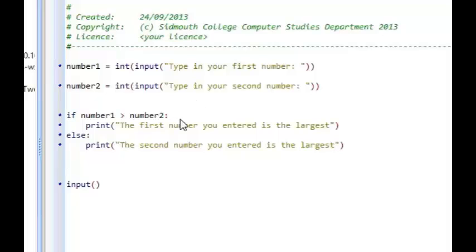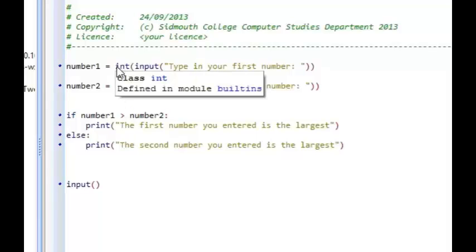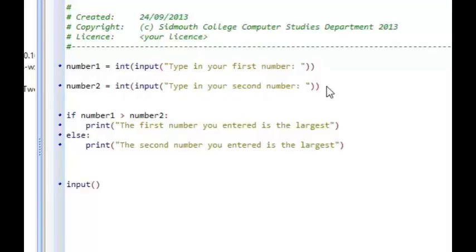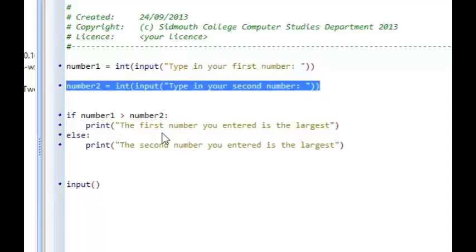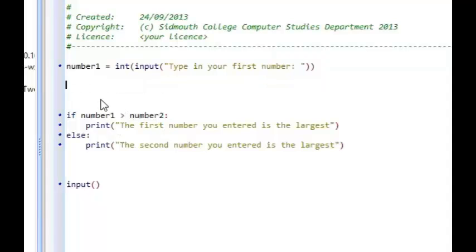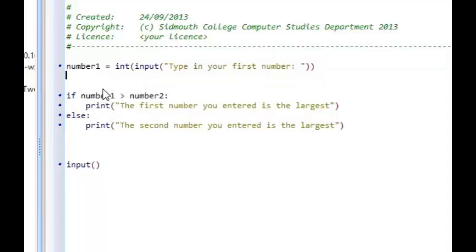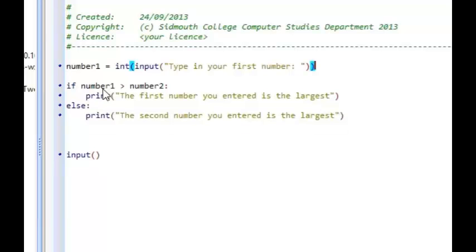Let's imagine that instead of displaying one of two options, we actually want our program to display one of three options. It might be that we want our program to decide whether the number we've entered is greater than zero, equals zero, or less than zero. As an example, if we're only going to type in one number and compare it against whether it's greater than, smaller than, or equal to zero, I can get rid of that second input statement.